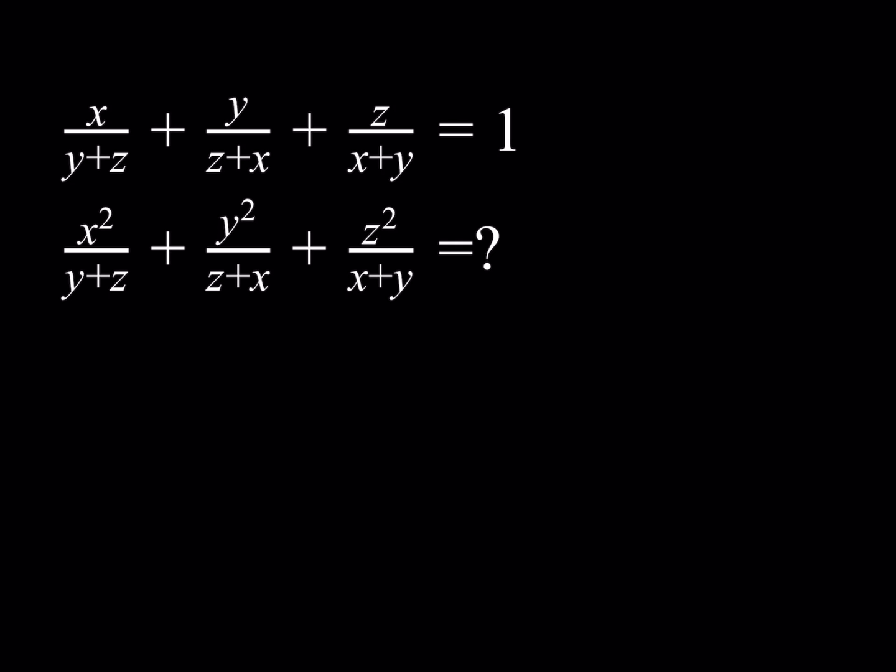So how do we manipulate it? Notice that both expressions have the same denominators — the only thing that differs is the numerator. Instead of x, we have x². Should we just square the expression? No, that's not a good idea because it would square the denominator too. Instead, the key observation is that x²/(y+z) is just x·(x/(y+z)), so multiplying the first term by x gives the first term we want.